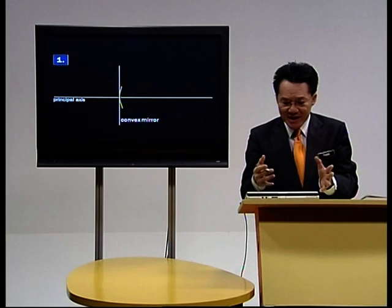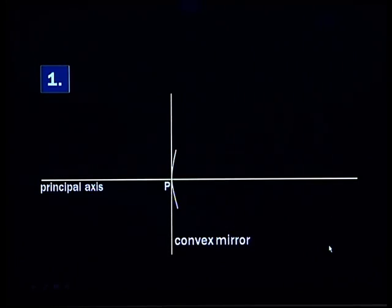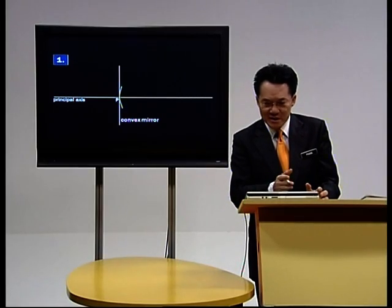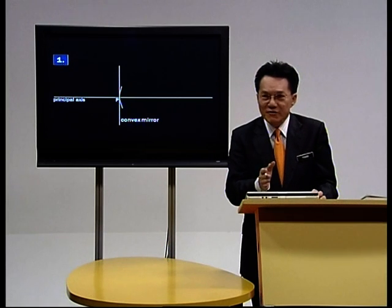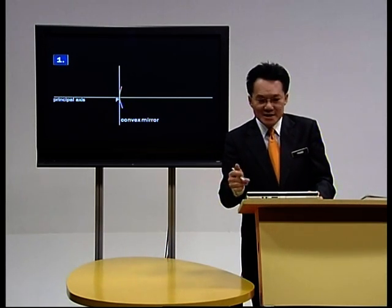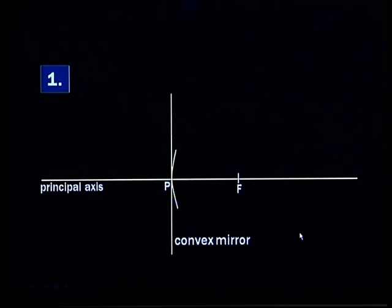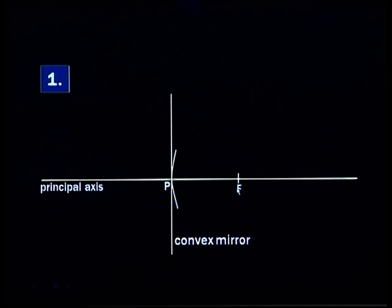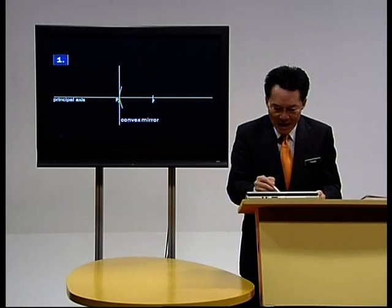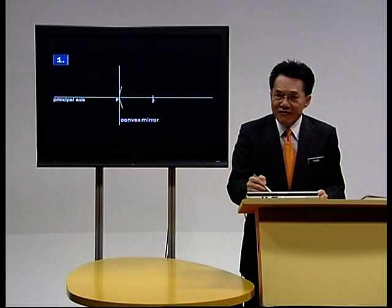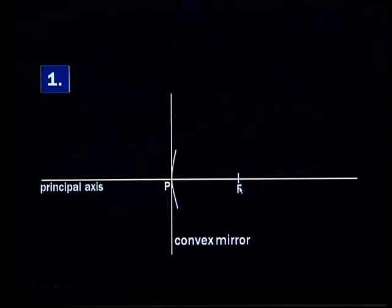The next point is P. What does P stand for? It is P for pole — P-O-L-E. That's the pole of the mirror. Let's say it is 10 centimeters from P to F. This is the focal length of the mirror. PF is the focal length, and F (capital F) is the focal point.